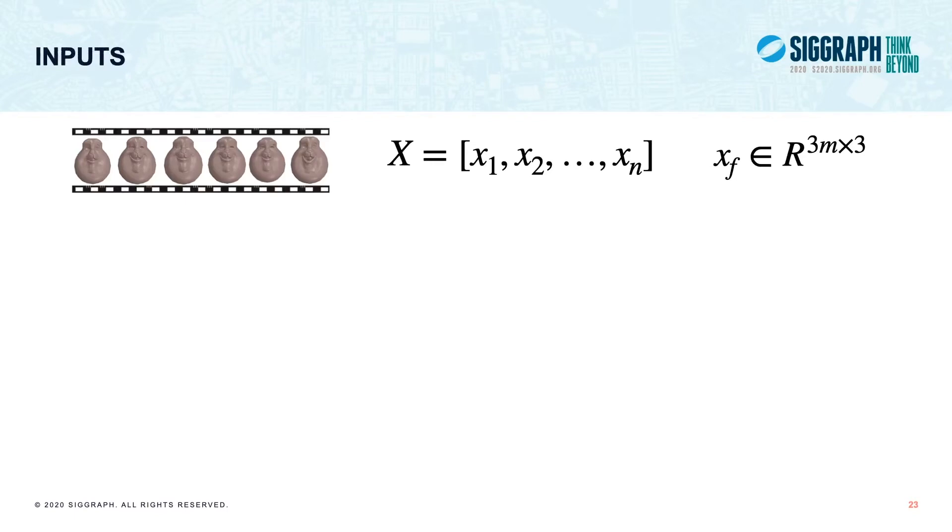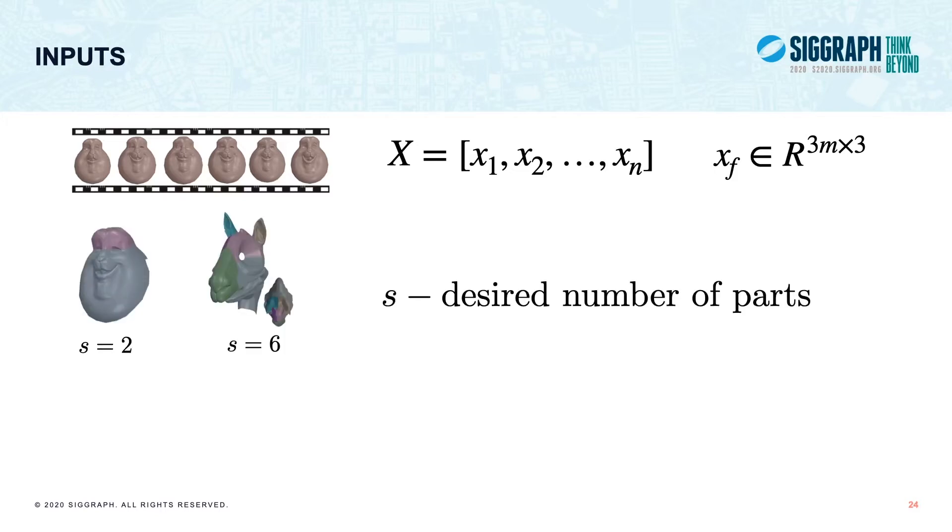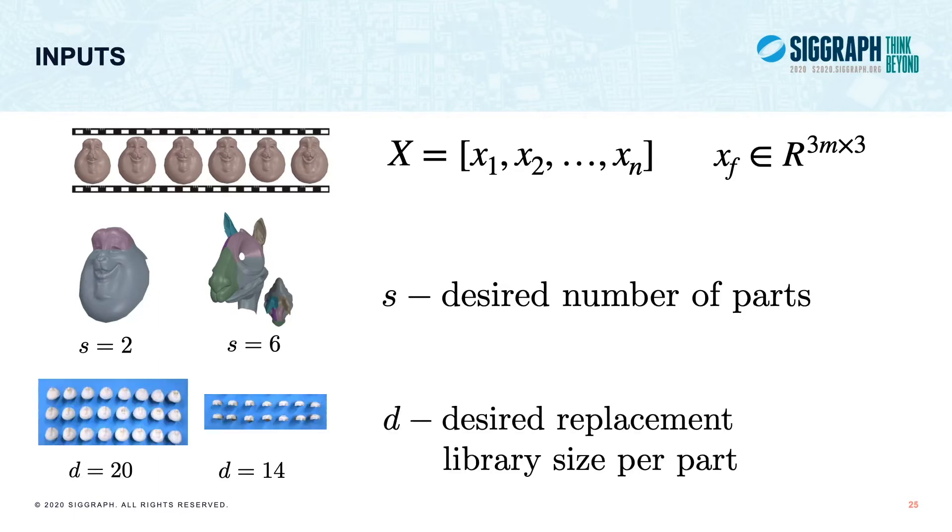Mathematically we can represent the input mesh animation sequence of n frames as a matrix where every column is a vector of stacked vertex positions. We assume the mesh does not change topology, connectivity, or number of triangles during the animation. The user also specifies the desired number of parts denoted as S and the desired size of the replacement library per part denoted as D.